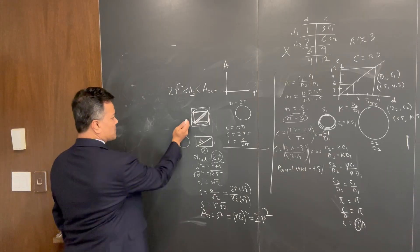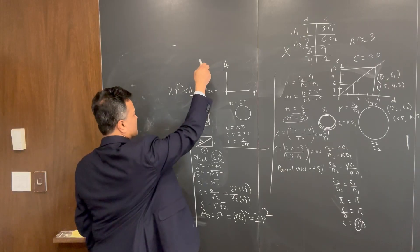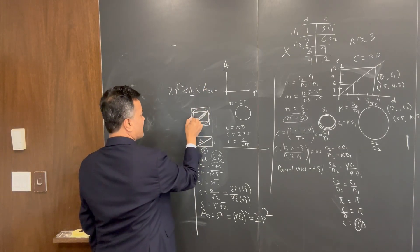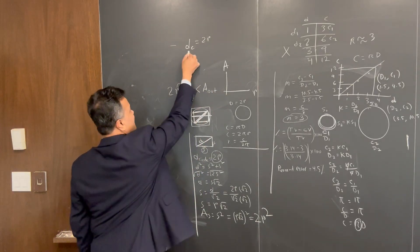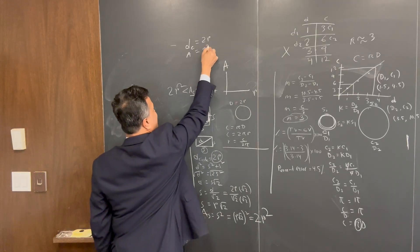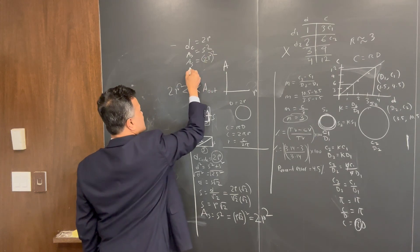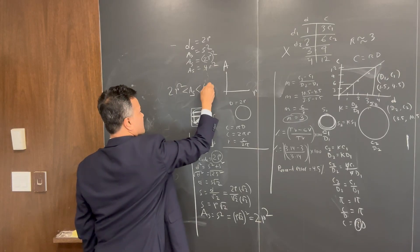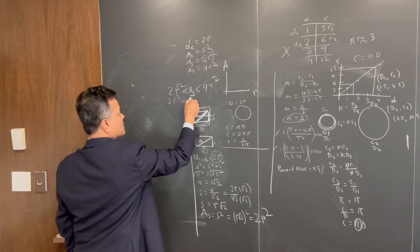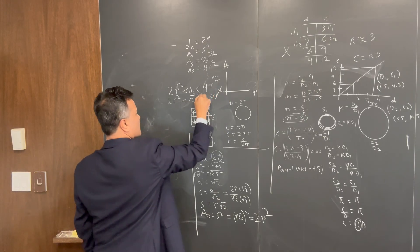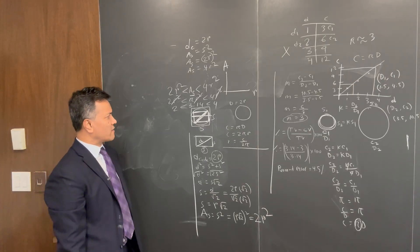Now for the circumscribed square: the diameter of the circle is 2r, which equals the side of the outer square. So the area of the circumscribed square is (2r) squared equals 4r squared. This gives us: 2r² < πr² < 4r². Dividing through by r squared, π is between 2 and 4 — and since π is 3.14, that's confirmed.